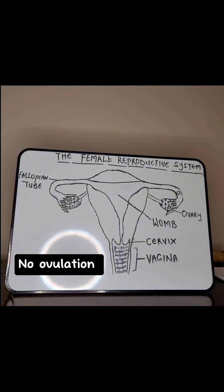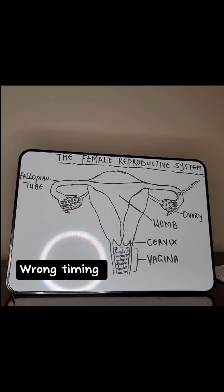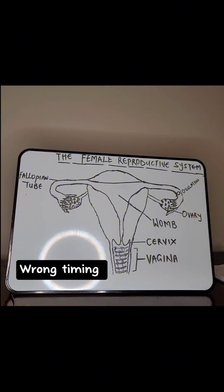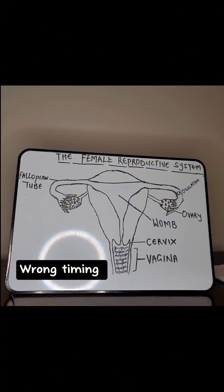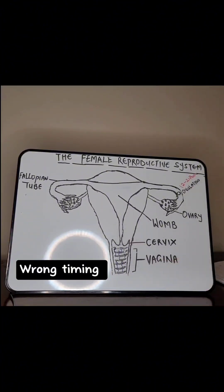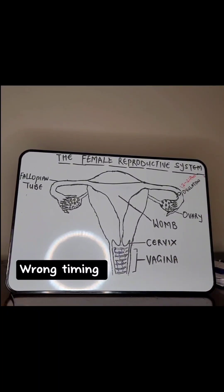As we age, the number of times we ovulate starts to reduce. So a woman who is not ovulating cannot get pregnant. Now let's talk about timing intercourse. If you're ovulating but you're always having sex at the wrong time, you will not get pregnant. The lifespan of the egg is 12 to 24 hours, which means once you release this egg it must be fertilized within that time frame, or the body will take it back.